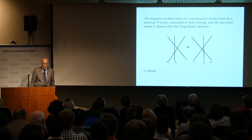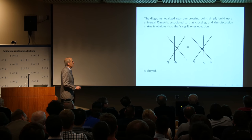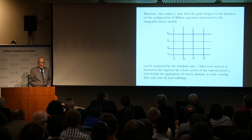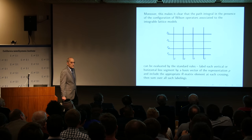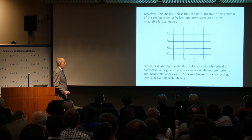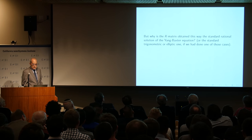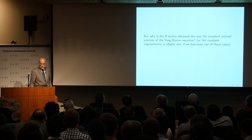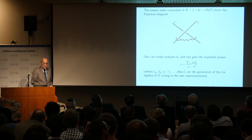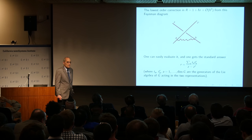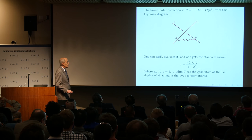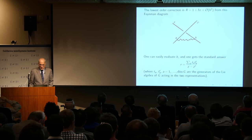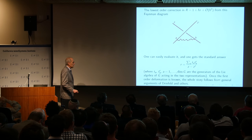As I said, diagrams near a crossing point build up a universal R matrix associated to that crossing, and the discussion makes it obvious that the Yang-Baxter equation is satisfied. The lowest order nontrivial contribution to the R matrix comes from the single gluon exchange diagram, and you can easily evaluate that integral to get the standard answer for the lowest order nontrivial contribution in the rational solution of Yang-Baxter. Once the first order of deformation is known, the whole story follows from general arguments.